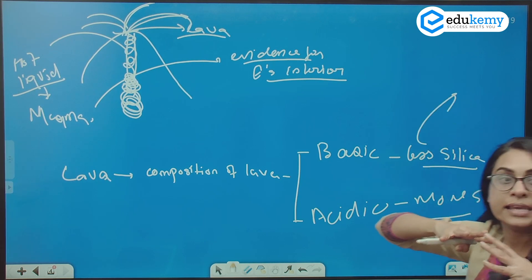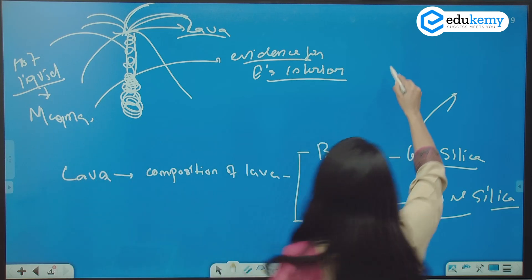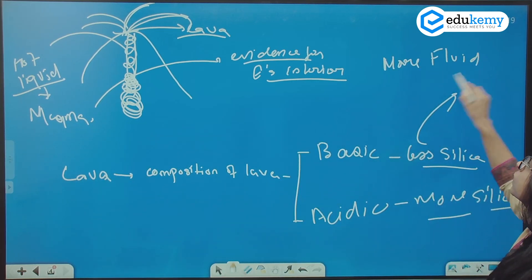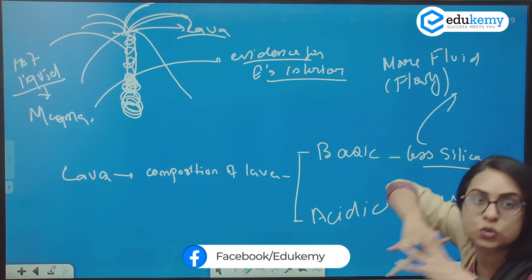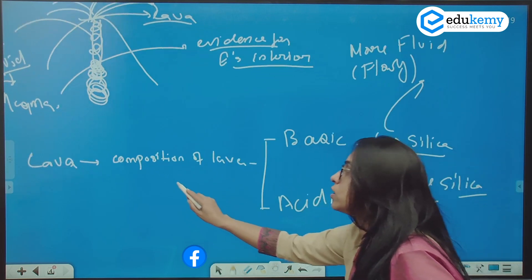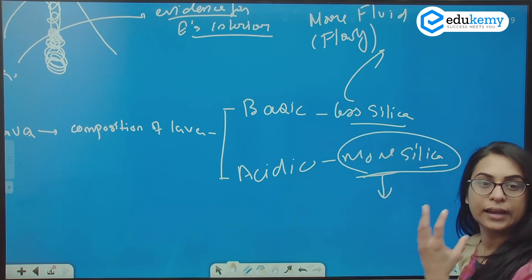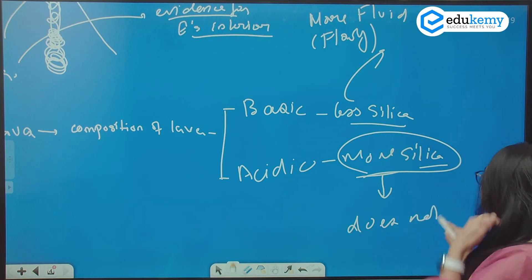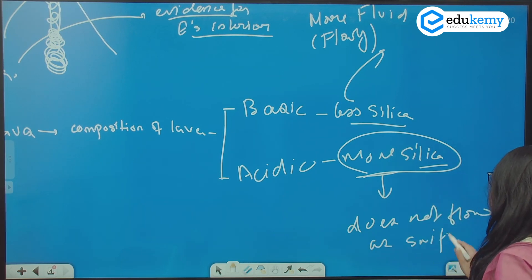If it has got less silica, basic lava is more fluid in nature — more flowy in nature, it flows swiftly and it spreads. And the acidic lava, which has got more silica, does not flow as swiftly.